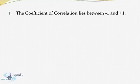The first property of correlation coefficient is that the coefficient of correlation lies between minus 1 and plus 1. The value of the correlation coefficient will always lie in between minus 1 to plus 1, that is r_xy will fall between minus 1 to plus 1.